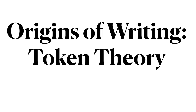This is Ling 270, Language Technology and Society. We will now continue our examination of the origins of writing with a modern theory that tries to explain the origins of how writing came to be as a language technology. This is token theory.